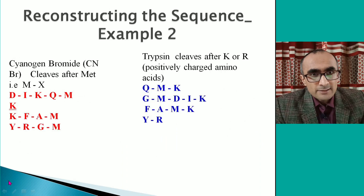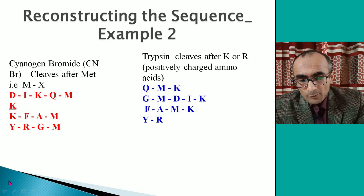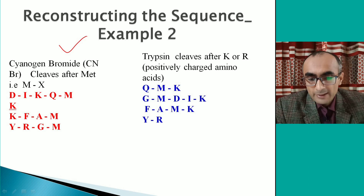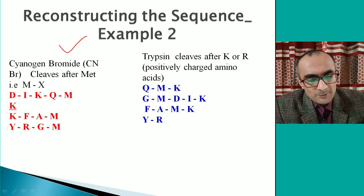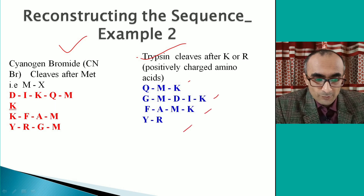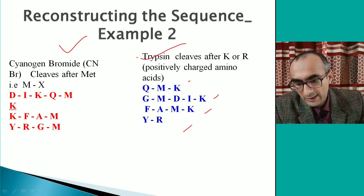Now let's look at another example of reconstructing a sequence. You have a peptide cleaved by cyanogen bromide (CNBr), and the four fragments are shown in red. CNBr cleaves at the C-terminal side of methionine. The same peptide treated with trypsin gives four fragments shown in blue. You need to reconstruct the sequence from this information. As before, you look at the common N-terminal amino acids across the two peptide sets.